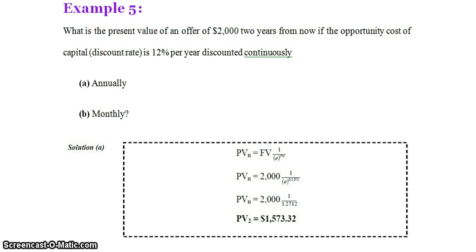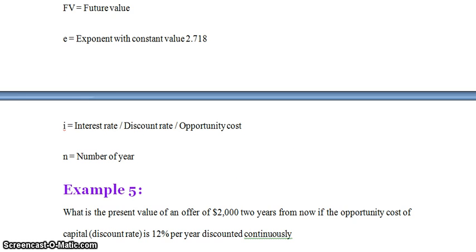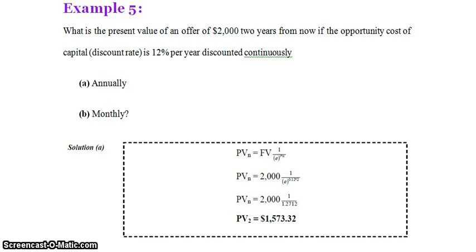PV(n) = 2000 × (1 / 2.718^(0.12×2)). The e value is 2.718. Simplifying the exponent, that value comes to 1.2712. So the present value for 2 years is equal to Rs. 1573.32. This is the annual answer.